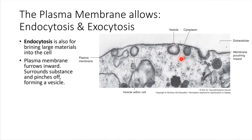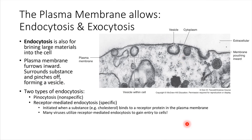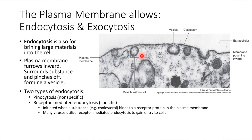This is called endocytosis, and it results in a vesicle being formed. There are two types: pinocytosis and receptor-mediated. I was describing receptor-mediated endocytosis — this is a very specific way that cells can bring things in. Pinocytosis is something that is kind of just happening all the time in order to sample what's outside. Think of it like ocean waves — little ripples that form all the time on the plasma membrane, bringing in little bits of the extracellular environment. That's pinocytosis.